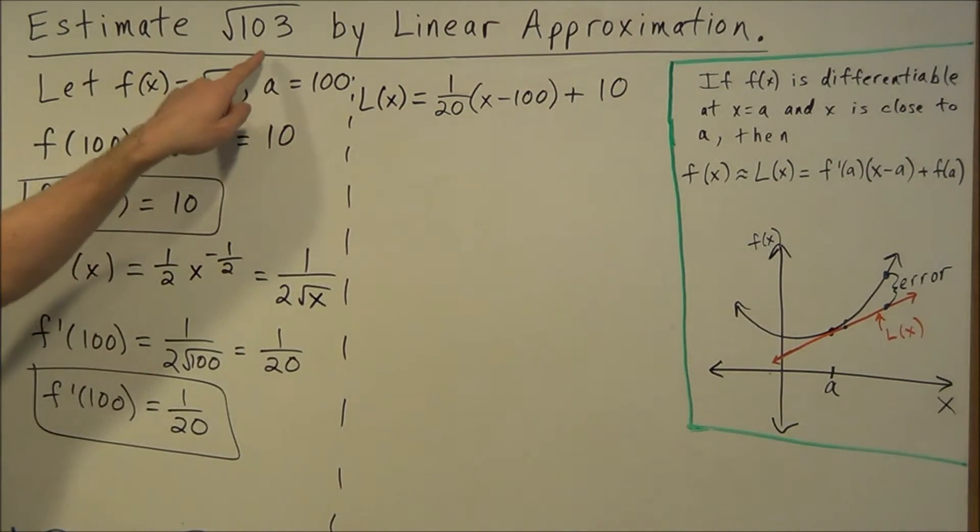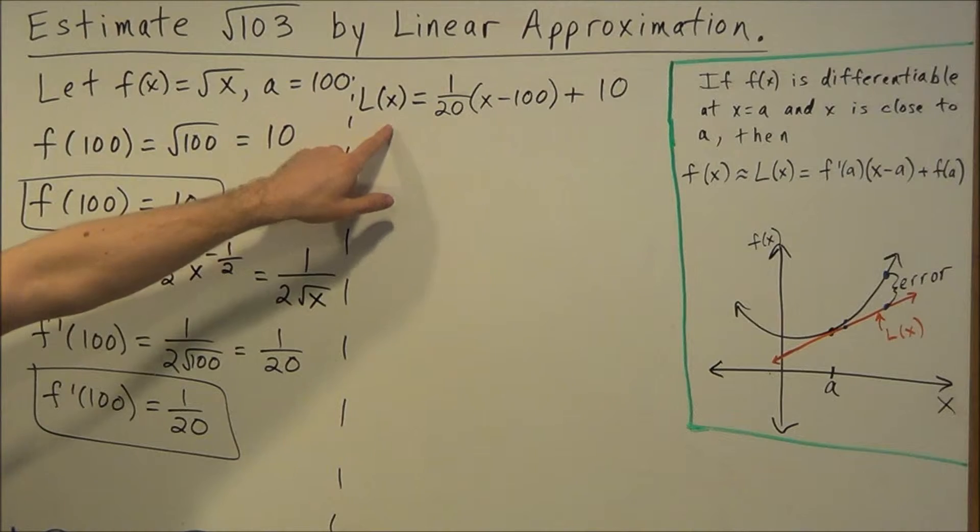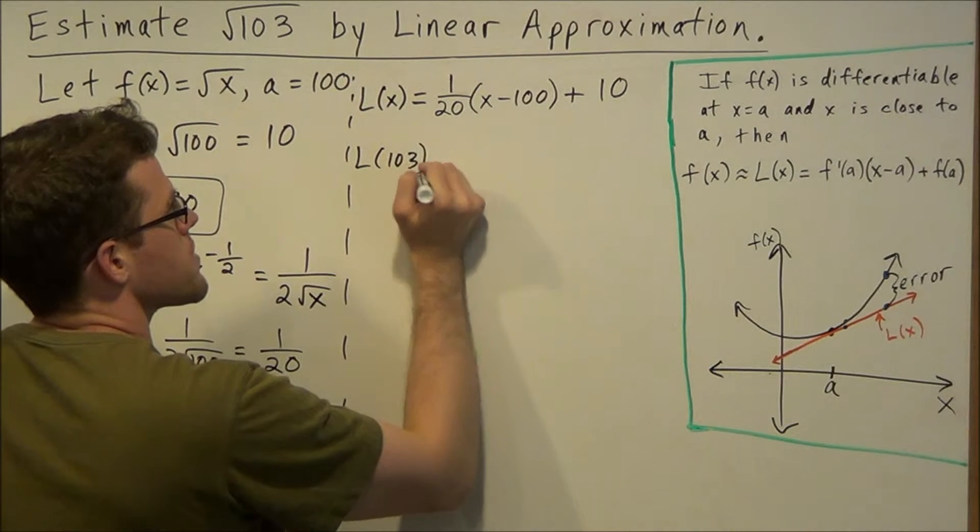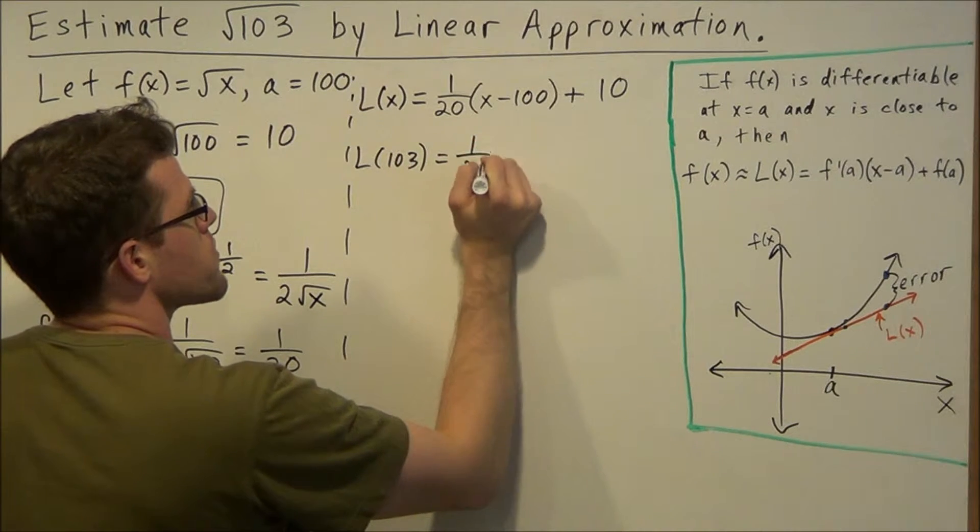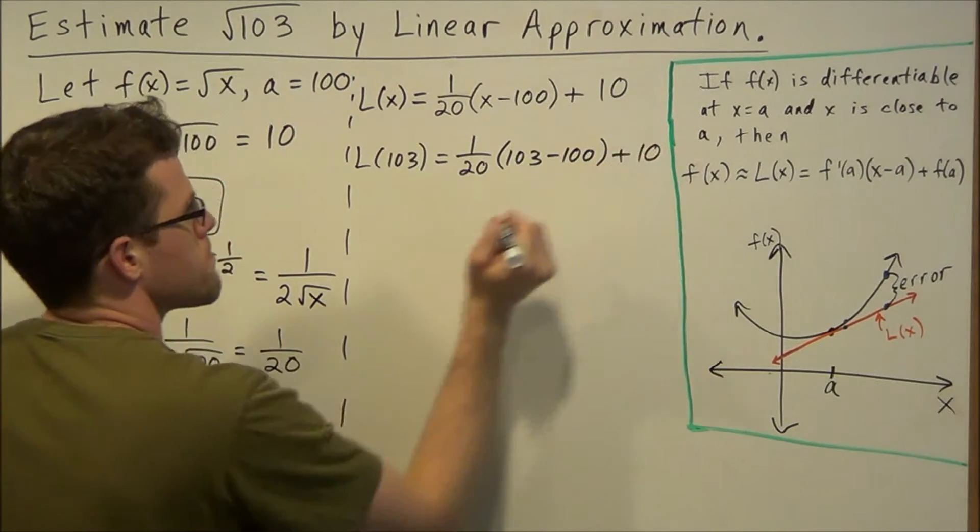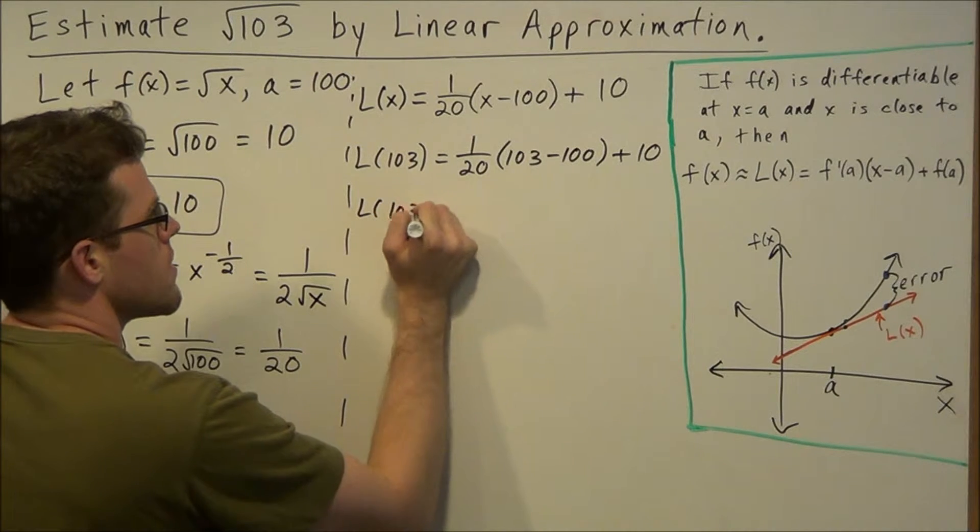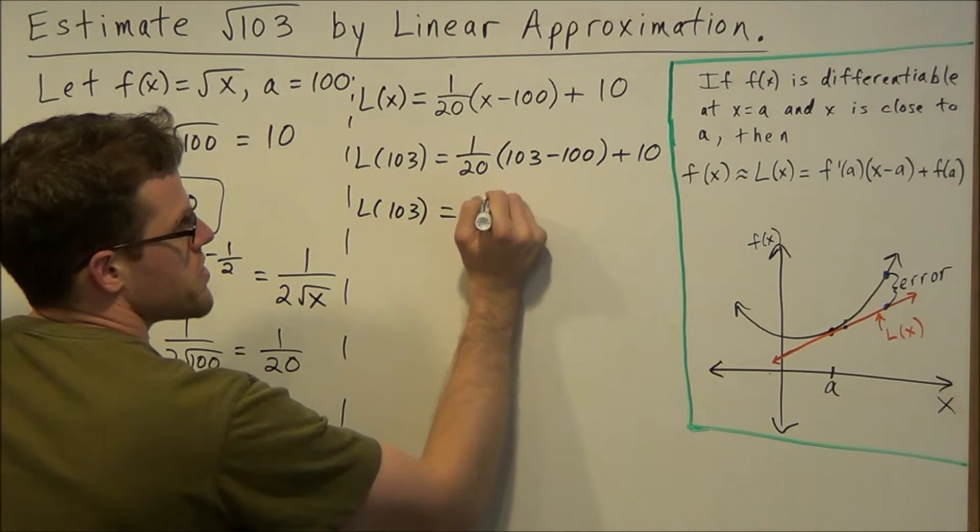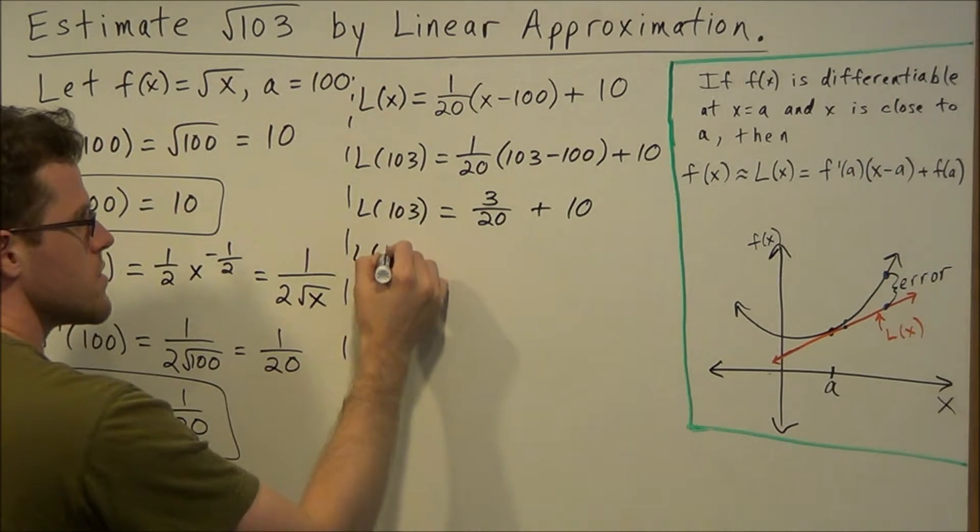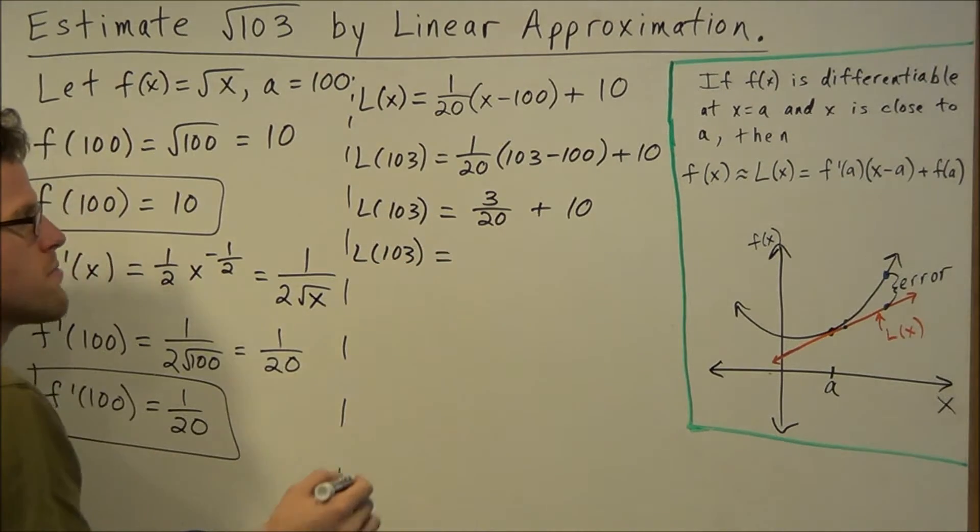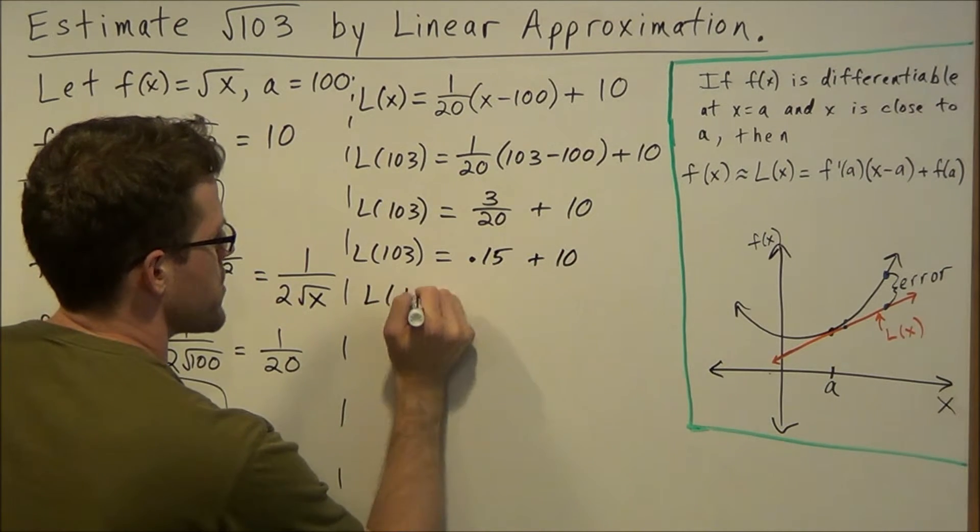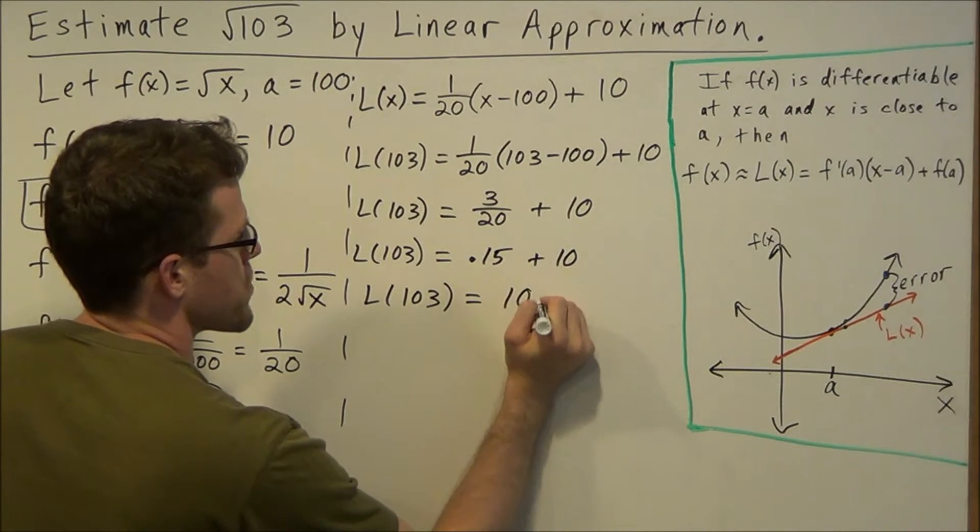So then if we want to approximate the square root of 103, all we have to do is plug 103 into our equation here. So we're going to have L(103) equals 1 over 20 times 103 minus 100 plus 10. And when we simplify this, this is going to give us 3 over 20 plus 10. And 3 over 20 will simplify to 0.15. So our value here is equal to 10.15.